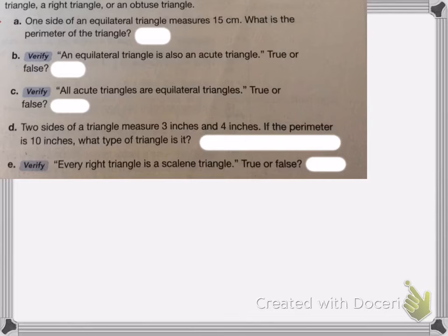So let's just answer these questions. So A, one side of an equilateral triangle measures 15 centimeters. What is the perimeter of the triangle?